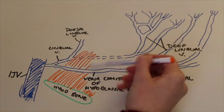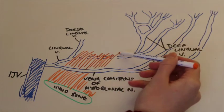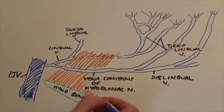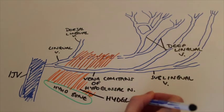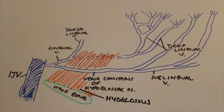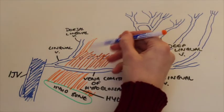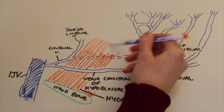Things like veins are very variable and it depends on the person. So what I've drawn is what you'd usually expect. It's also kind of based on Moore's clinically orientated anatomy, which is a good textbook to use.